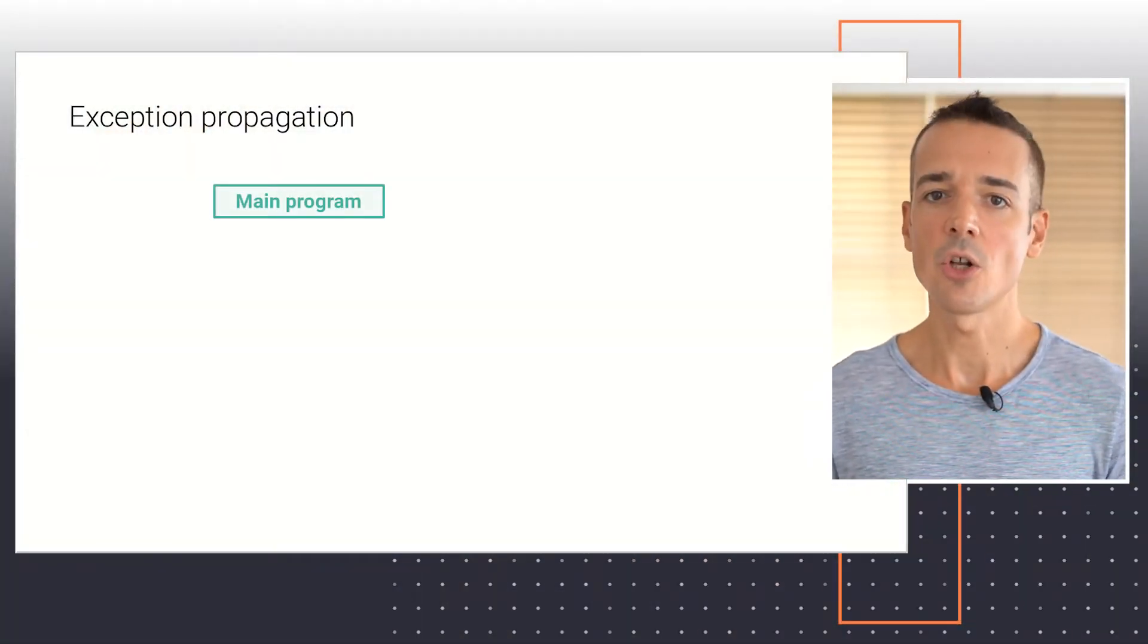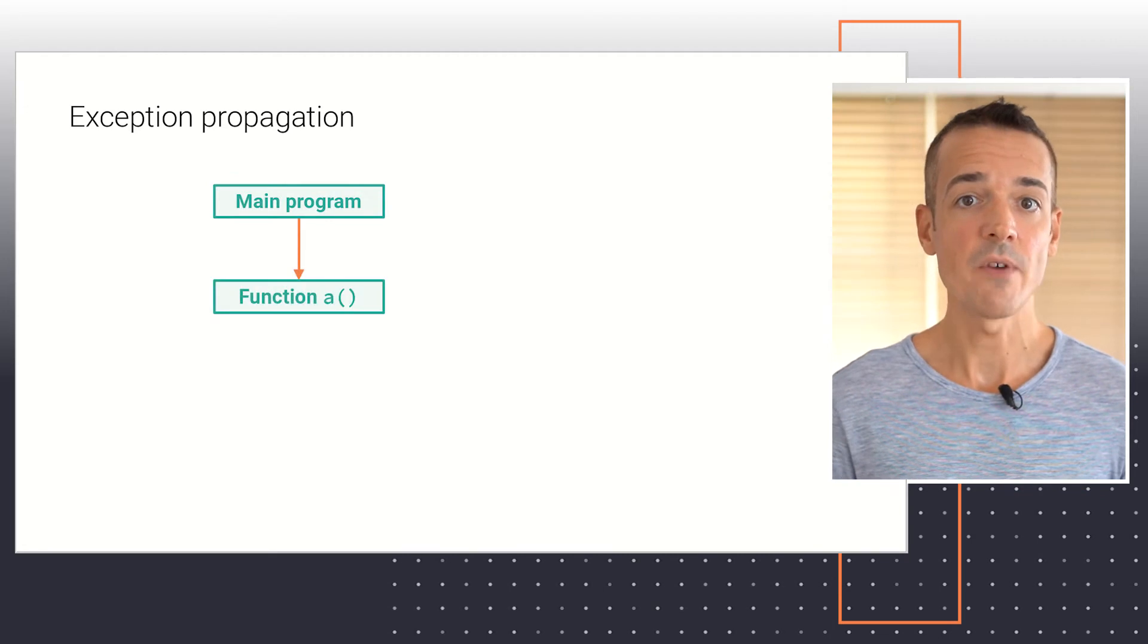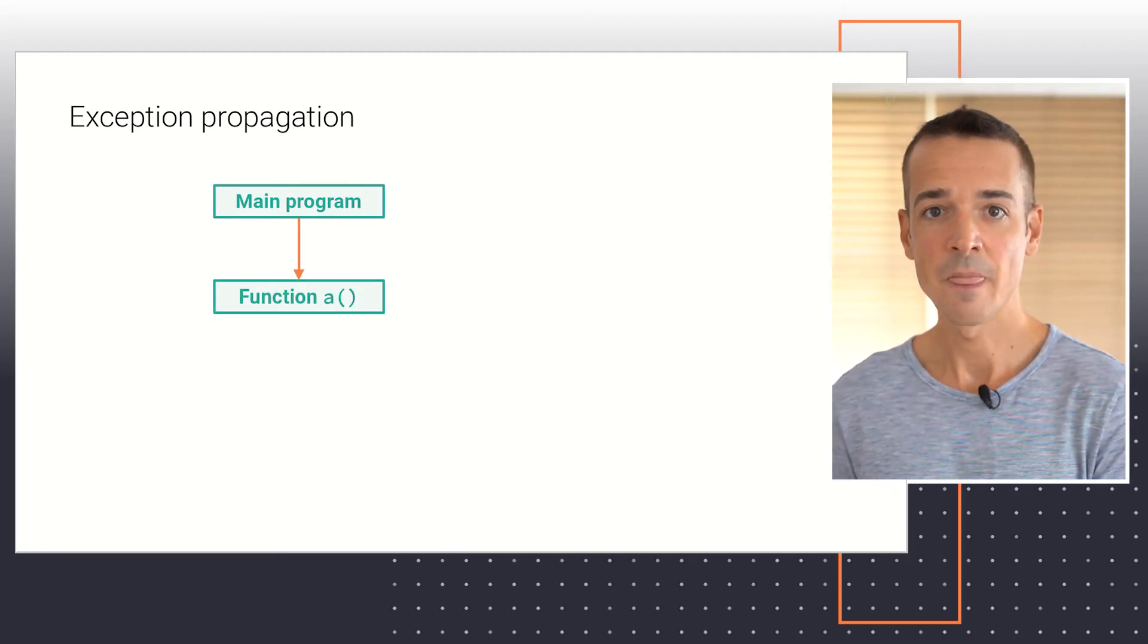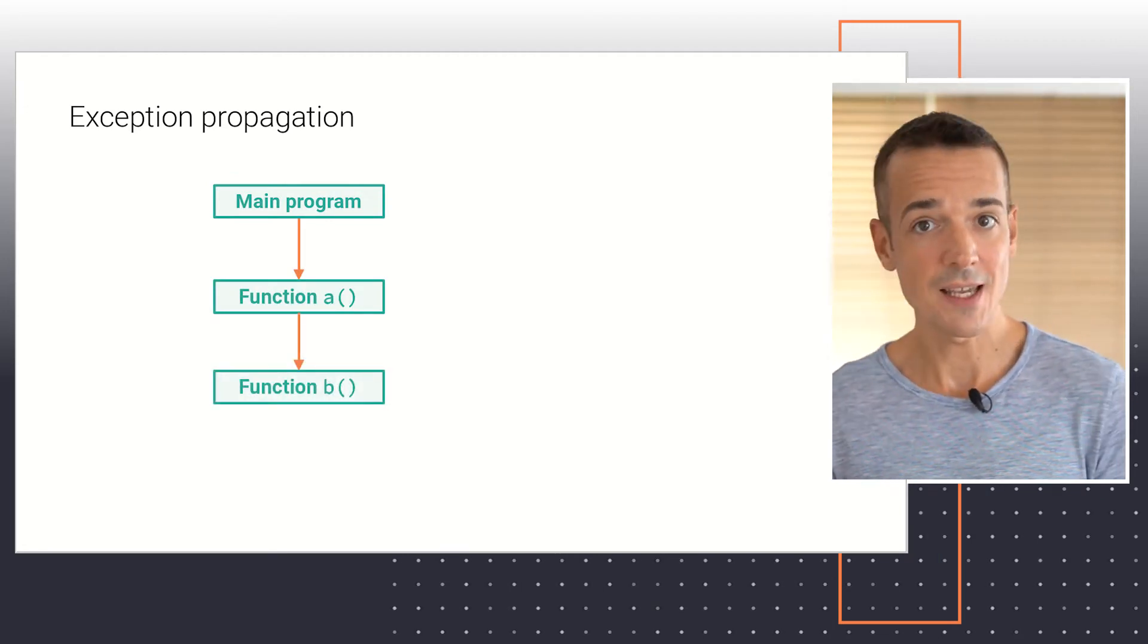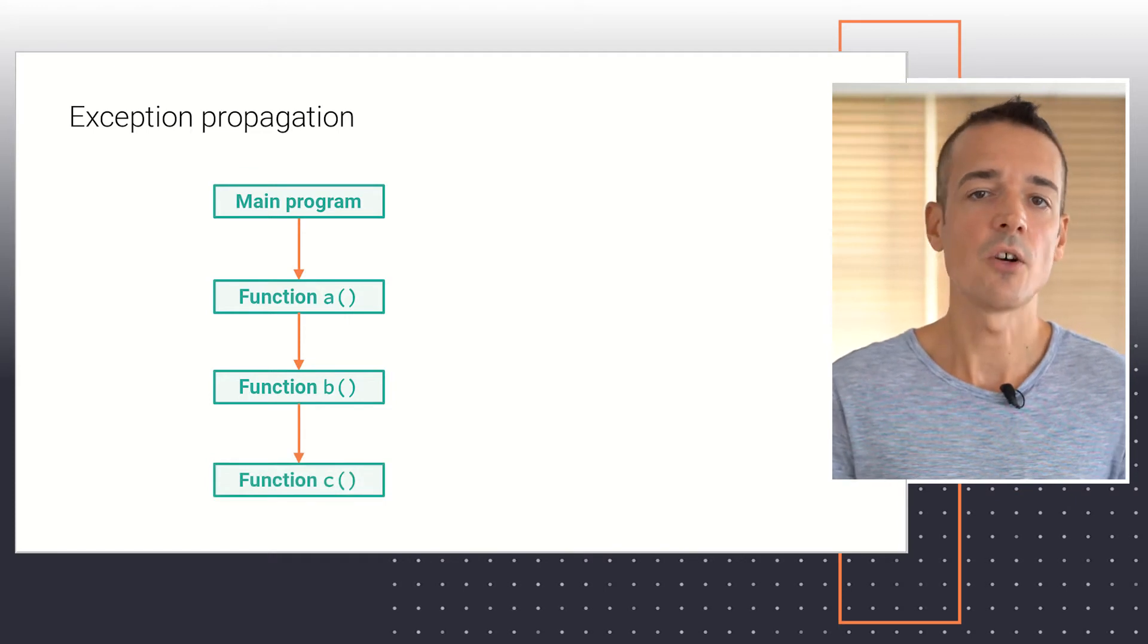For example, consider the following call tree in which the main program invokes function A, which in turn invokes function B, which in turn invokes function C.